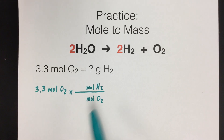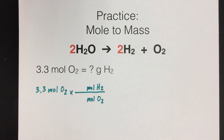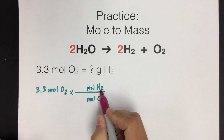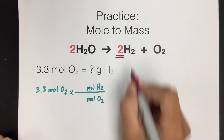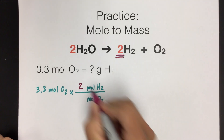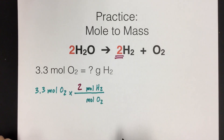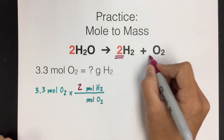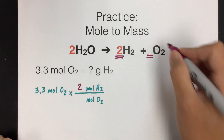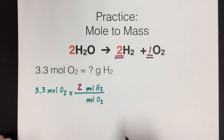To get the numbers for the mole ratio, we refer to the balanced chemical equation. For H2, we find it in the balanced equation and see that there are two moles of H2. For O2, there's nothing written, meaning it's one mole of O2. So we put a one in the bottom of our mole ratio.